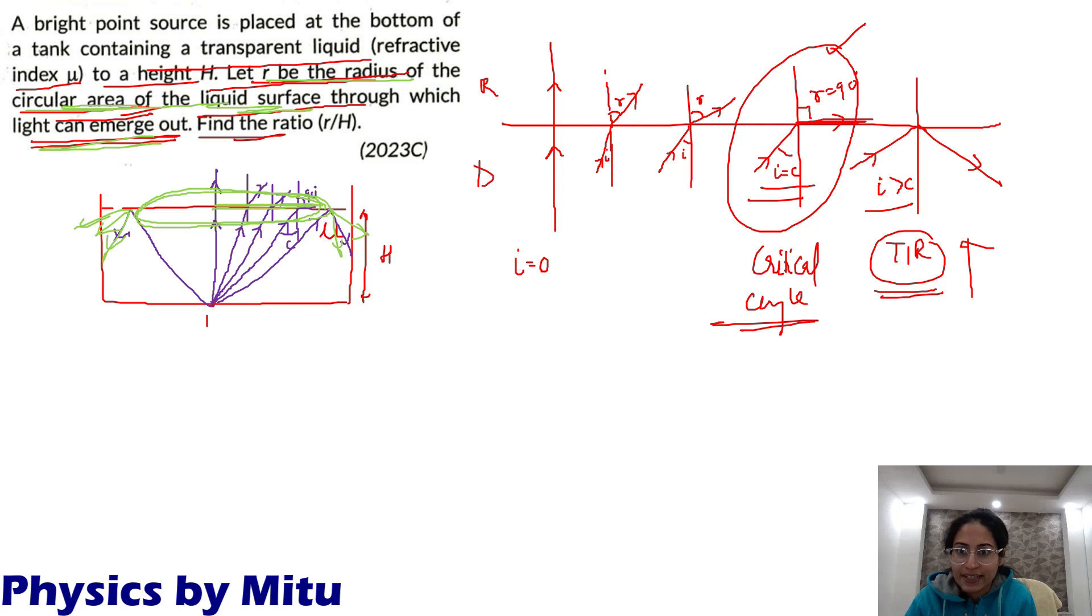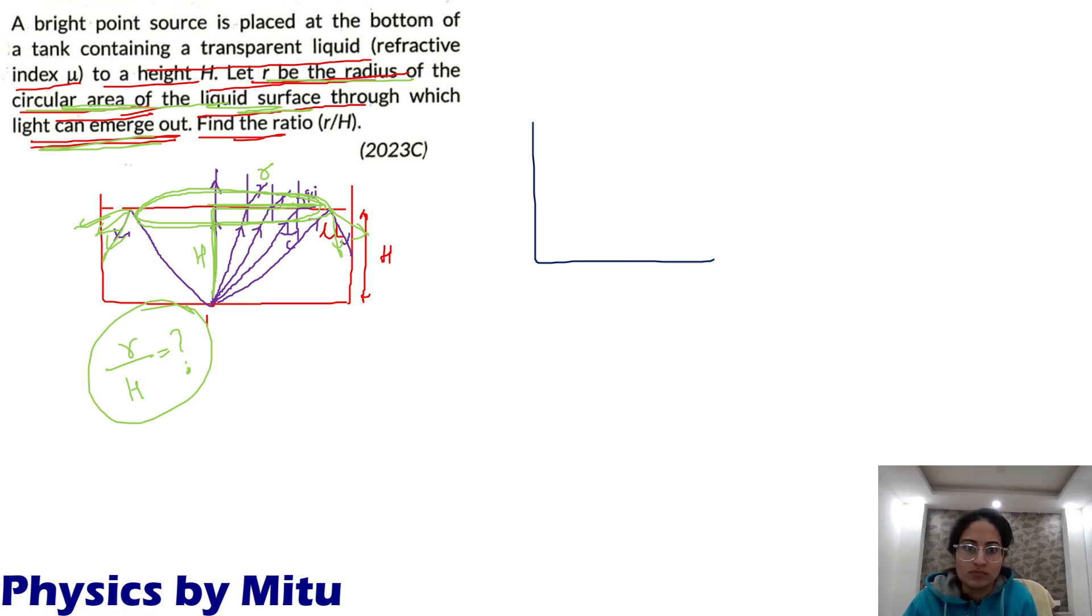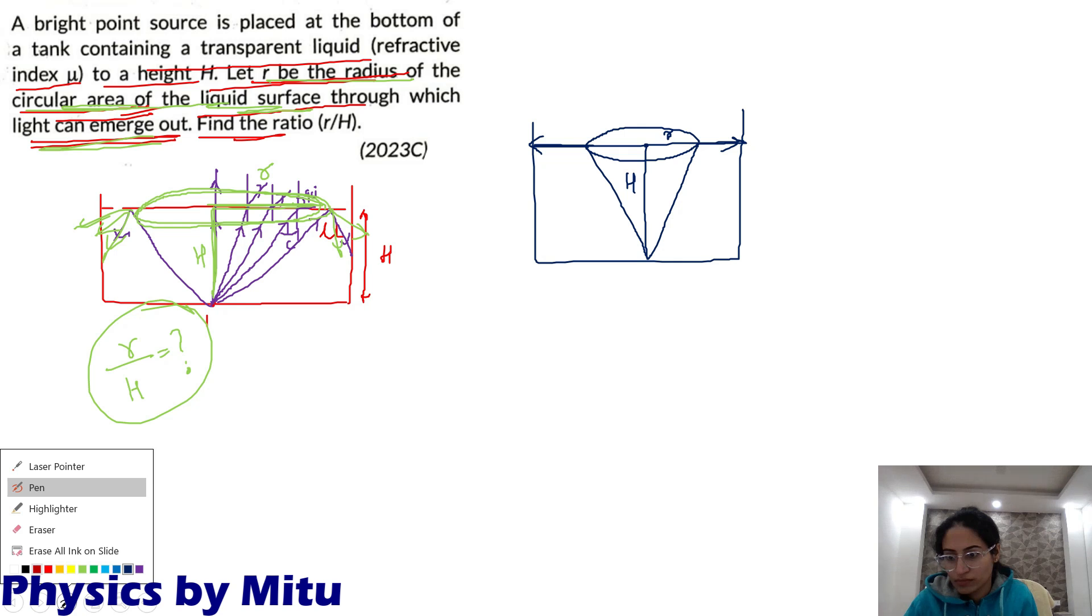That means it is talking about this radius. And this is capital H. We have to find r by H. How do we find it? I am making a new figure. This is normal. This is the critical angle. Angle of refraction is 90. We extend this here.